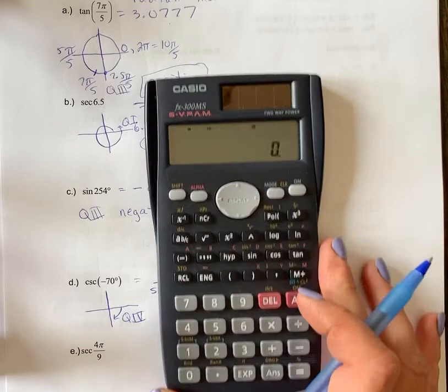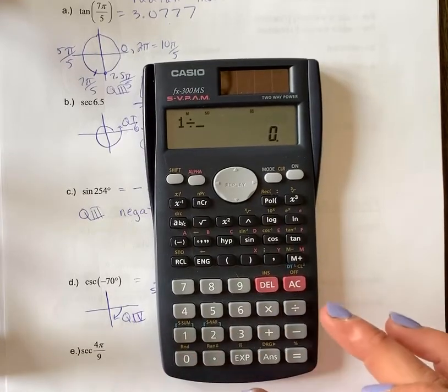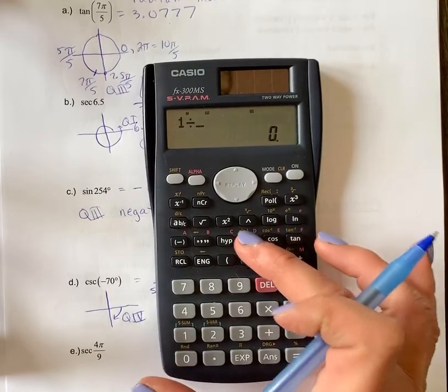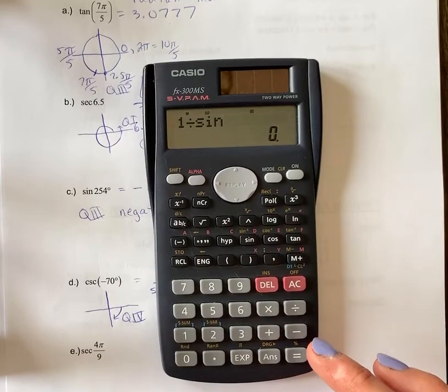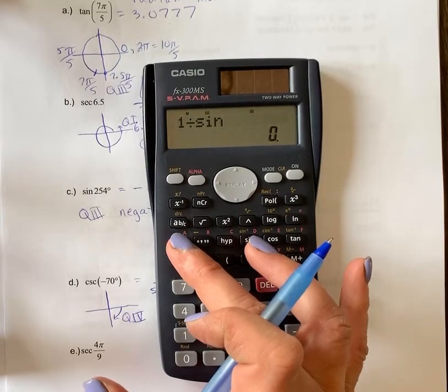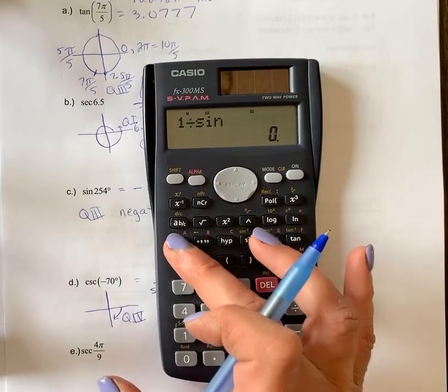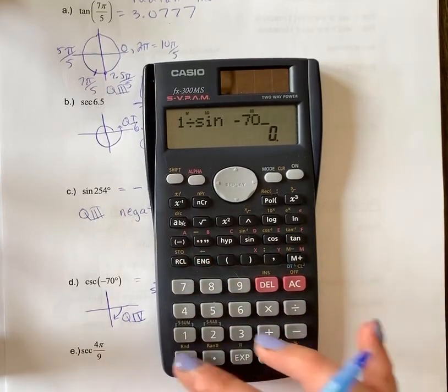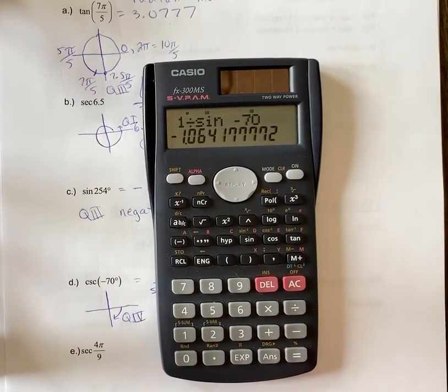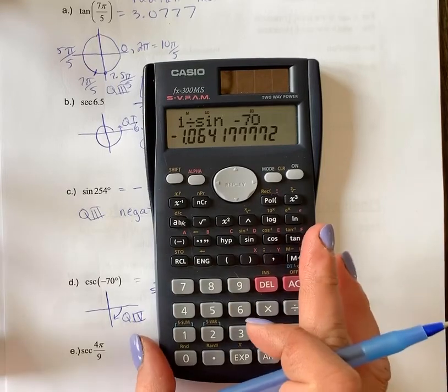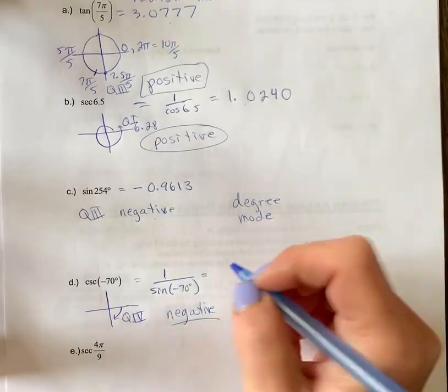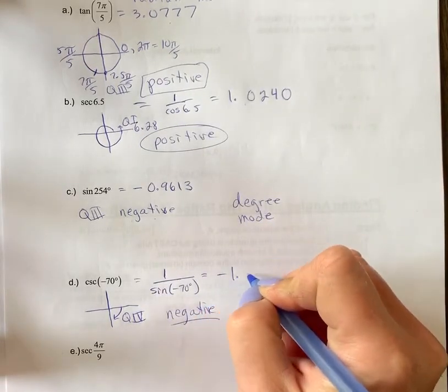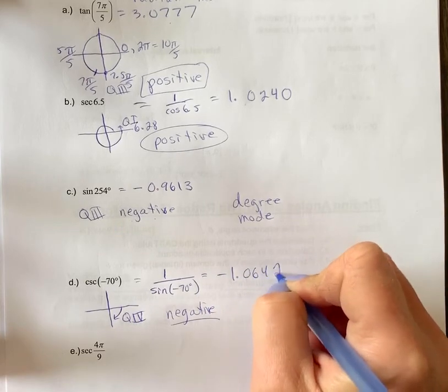Mine's still in degree mode. 1 divided by sine negative 70. Make sure you use the negative button and not the minus button, so negative 70. So I got negative 1.064177. To four decimal places is negative 1.0642.